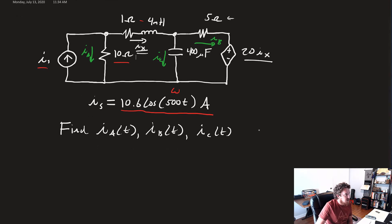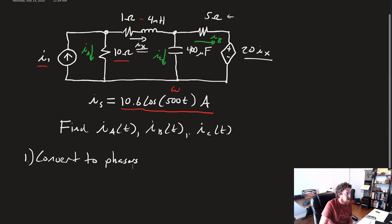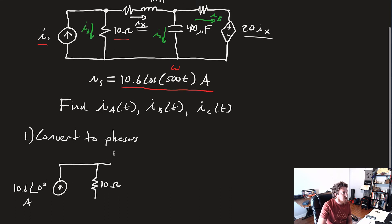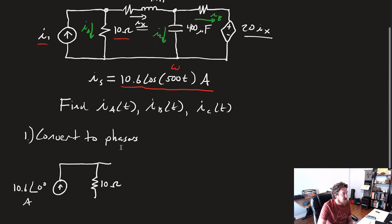So the first thing we want to do is convert to phasers. We'll redraw everything with phasers. We'll have this current source, 10.6 at an angle of 0 degrees in amps. Same deal, this resistor is just 10 ohms. This resistor is 1 ohm.